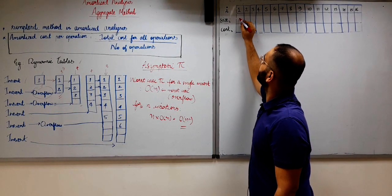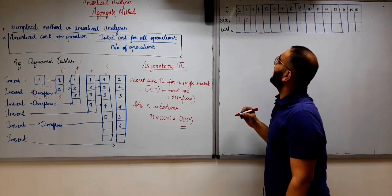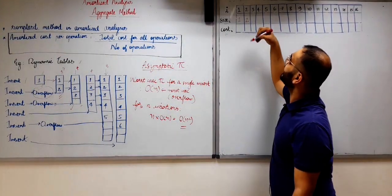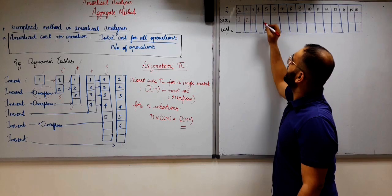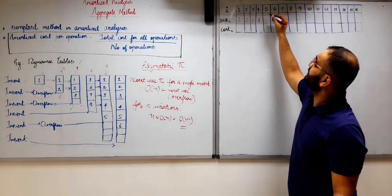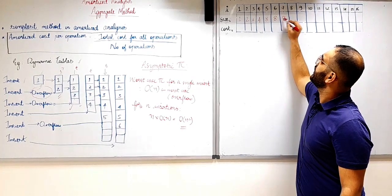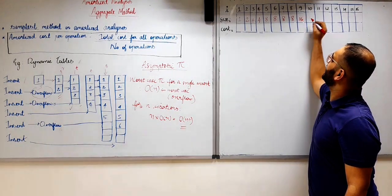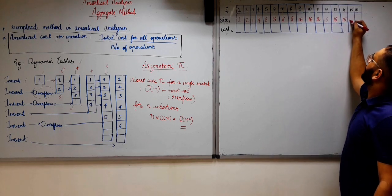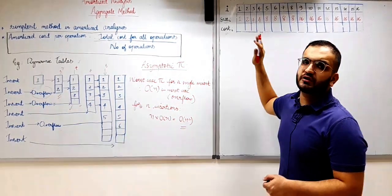In the first insertion the size of the dynamic table is 1. In the second insertion the size will be 2. In the third insertion there will be an overflow, so the size doubles to 4. In the fourth insertion there is no overflow, the size remains 4. In the fifth insertion there is an overflow, so the size doubles from 4 to 8. In the sixth insertion there is no overflow, so the size remains 8. In the ninth insertion there is an overflow, so the size doubles from 8 to 16.